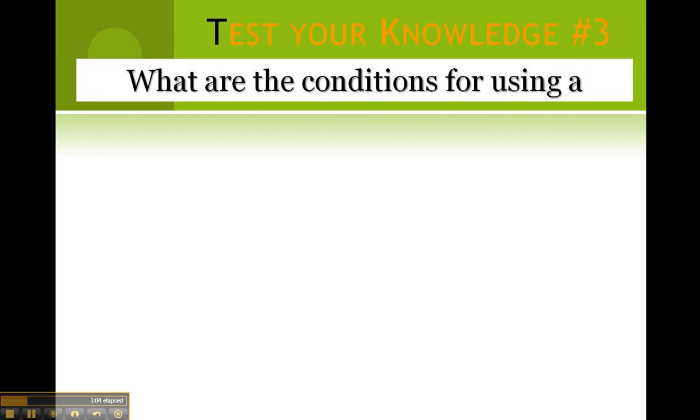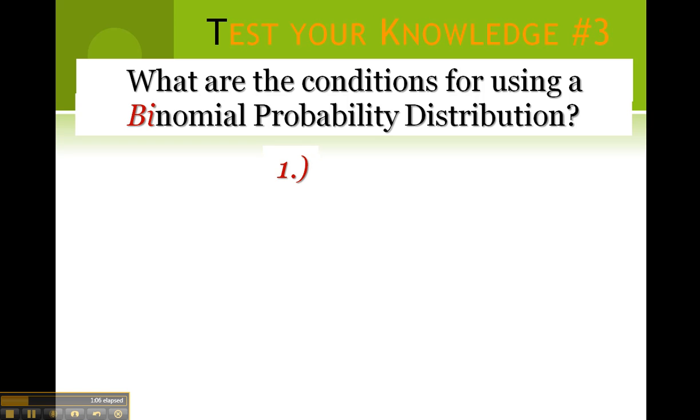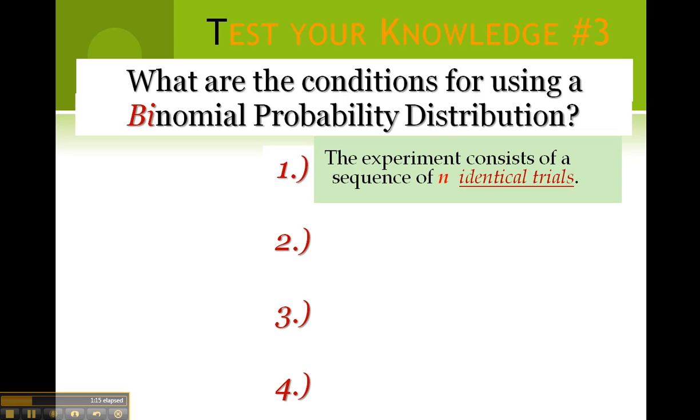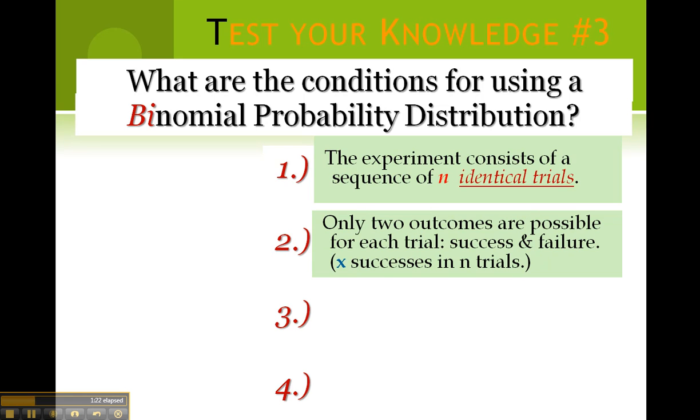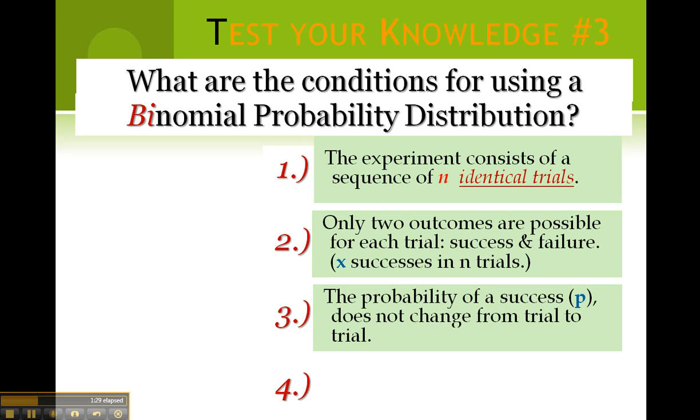Let's test your knowledge a third time. What are the conditions for using a binomial probability distribution? The experiment consists of a sequence of n identical trials. Only two outcomes are possible for each trial, success and failure. The probability of a success does not change from trial to trial. The trials are independent.